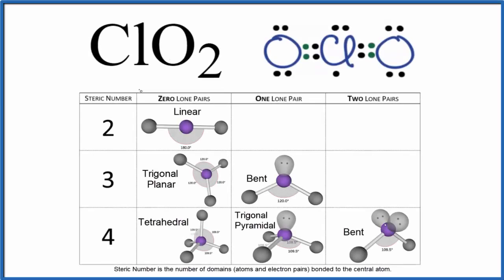Let's take a look at the molecular geometry and bond angles for ClO2. This is chlorine dioxide. We'll start with a valid Lewis structure. This is our Lewis structure here.